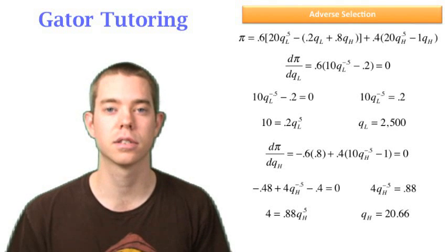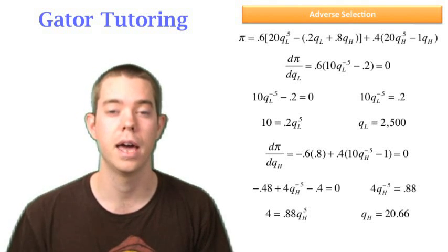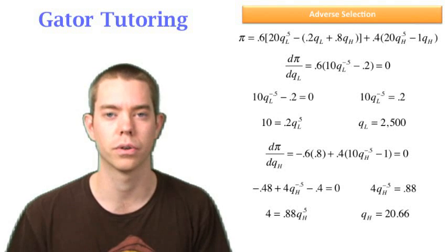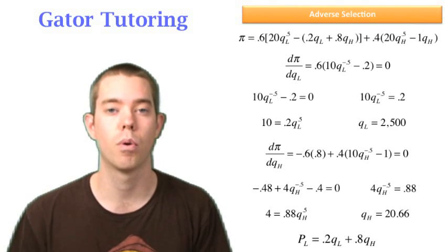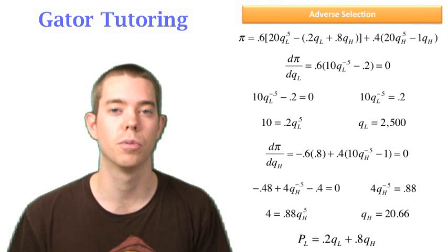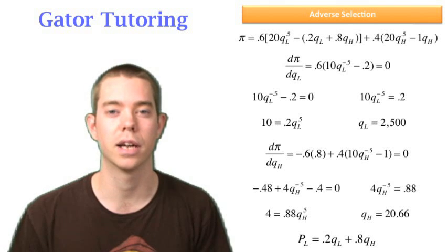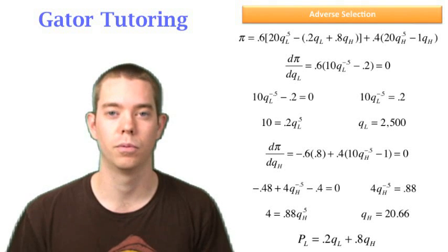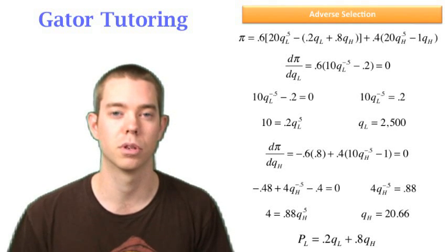So this question asked us to find the contract payment if costs turn out to be low and a large number is ordered, a large quantity is ordered. Well, that was asking us for PL and we know that PL is equal to 0.2QL plus 0.8QH. So that's why we had to solve for not only QL but we also had to solve for QH in order to solve for PL. In this case that's your answer. Remember that when costs are low, QL in this case is going to be larger than QH which is why he says and a large number of units are ordered.